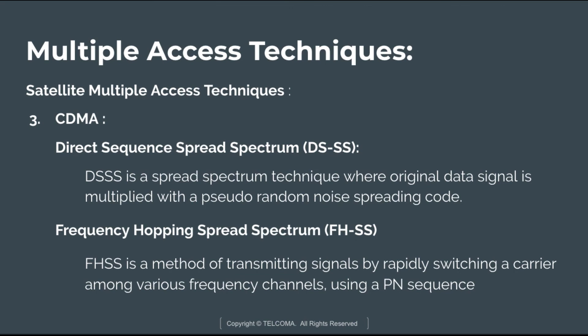CDMA is further divided into two types: Direct Sequence Spread Spectrum (DSSS) and Frequency Hopping Spread Spectrum (FHSS). In DSSS, the original data signal is multiplied with a pseudo-random noise spreading code. In FHSS, a signal is transmitted by rapidly switching a carrier among various frequency channels using a pseudo-noise sequence, and the PN sequence is known to both the transmitter and receiver. These are the two types of CDMA techniques.